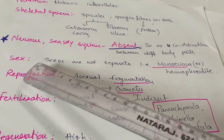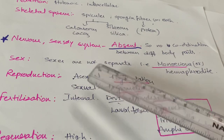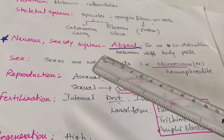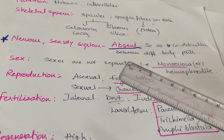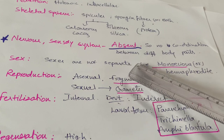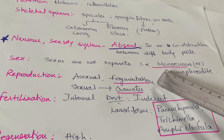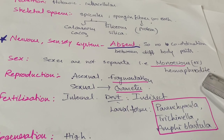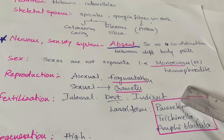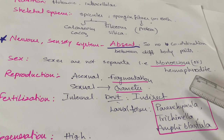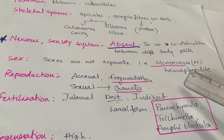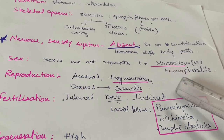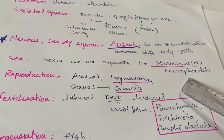Sexes are not separated in Porifera — there is no distinct male and female. Both sexes are present in a single animal. This type is known as monoecious or hermaphrodite. If male and female reproductive cells are produced from a single individual, that individual is known as monoecious or hermaphrodite.